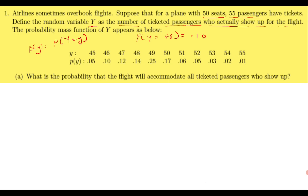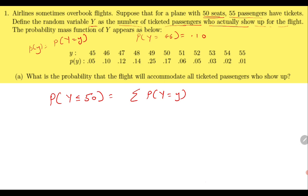We need to find the probability that the flight will accommodate all passengers who have tickets. The flight has 50 seats, so it can accommodate at most 50 passengers. We need to find the probability that Y is at most 50, which is the summation of P(Y = y) where small y moves from 45 to 50. Adding all these numbers gives the required answer, which comes out to be 0.83.